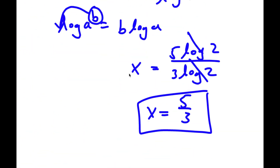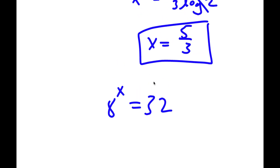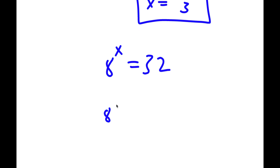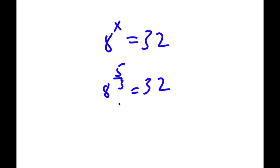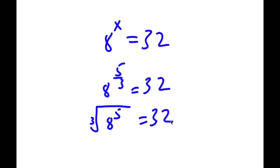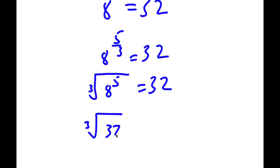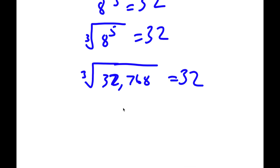Now to check: 8 to the power of x equals 32, with x equal to 5 over 3. So I have 8 to the power of 5 over 3, which is the same as the cube root of 8 to the power of 5. 8 to the power of 5 equals 32,768, and the cube root of 32,768 is 32. So 32 equals 32, meaning x equals 5 over 3 is correct.